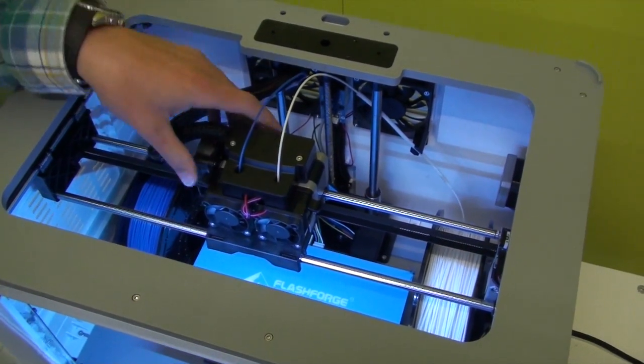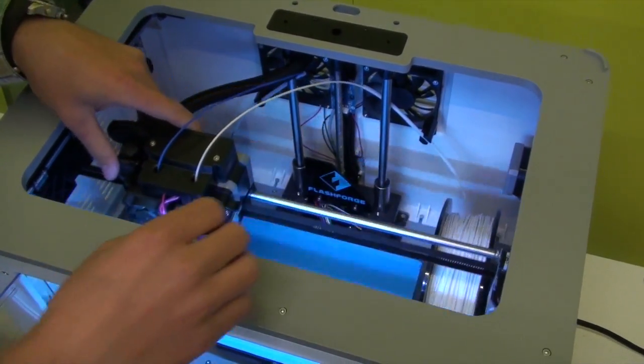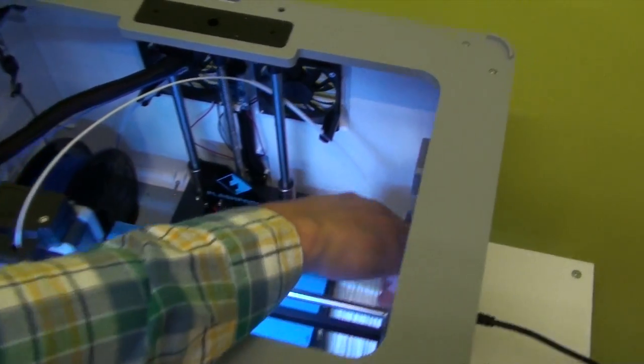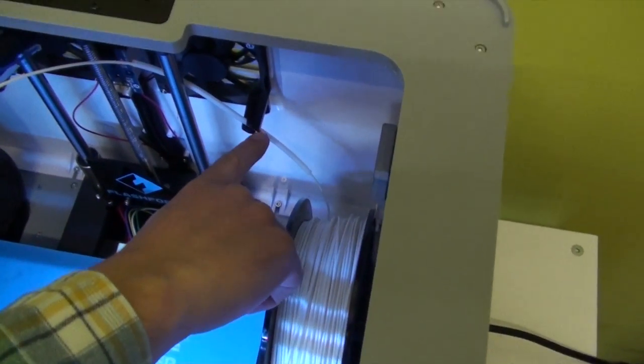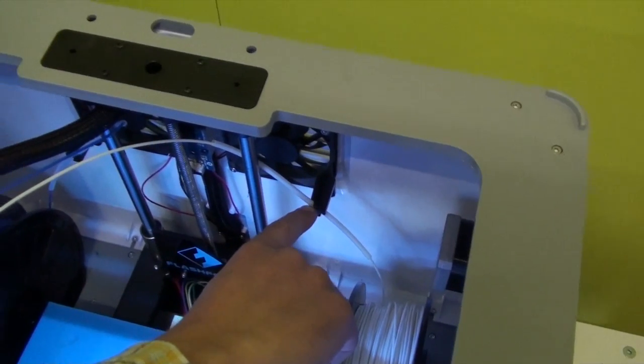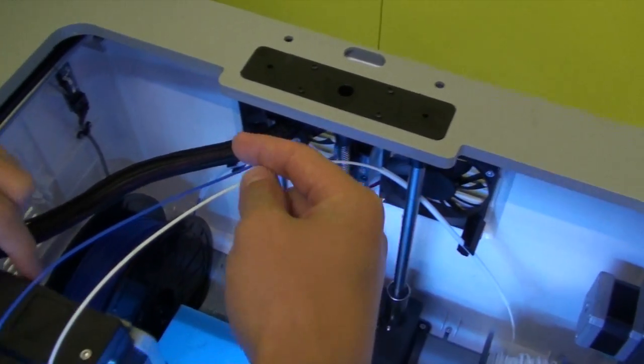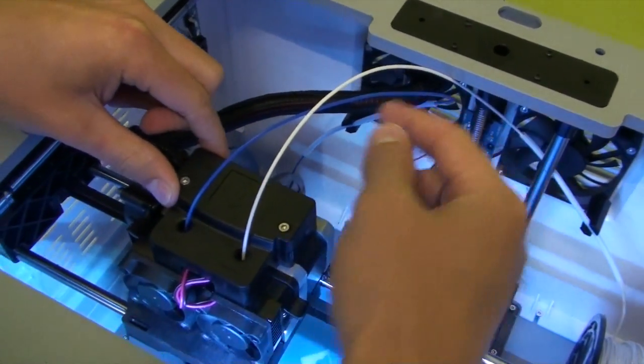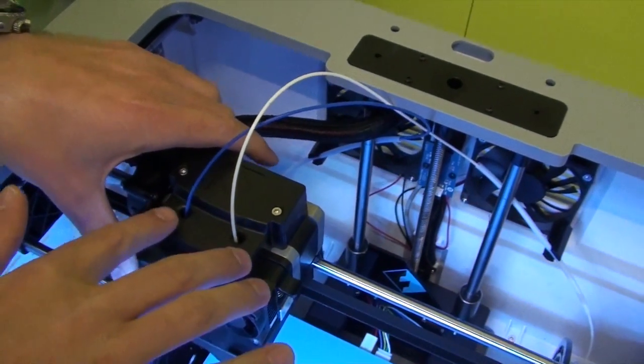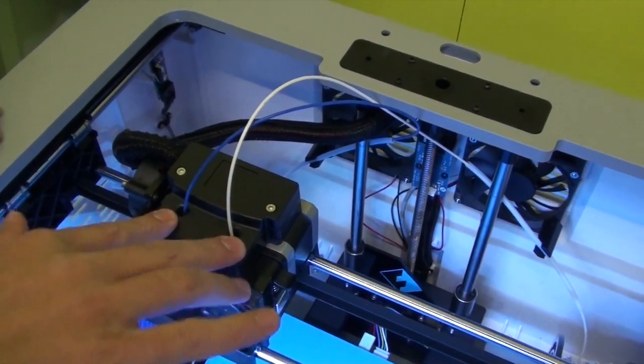It's all fairly straightforward. If you can see at the back, the filament just feeds through these guides on the rear of the printer there and comes out of the guide and then just loops down into one of the two extruders that it has.